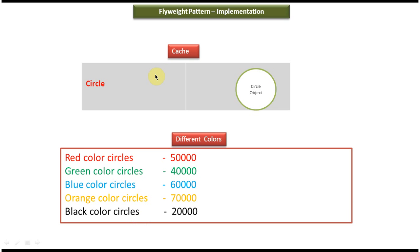What I can do is I can create the circle object without any color and put it in the hash. So only one circle object will be created and that circle object will be in the hash. And whenever I need to create a different color circle object, what I have to do is take this circle object which is in the hash and then fill it with the color.